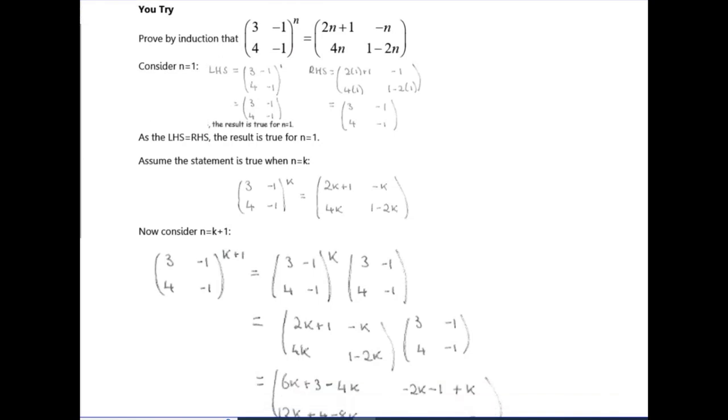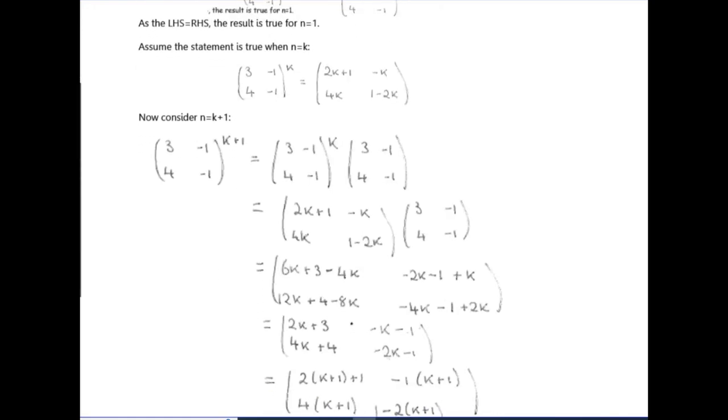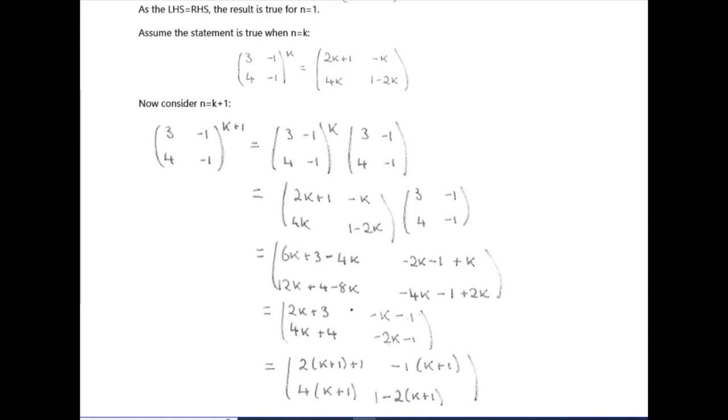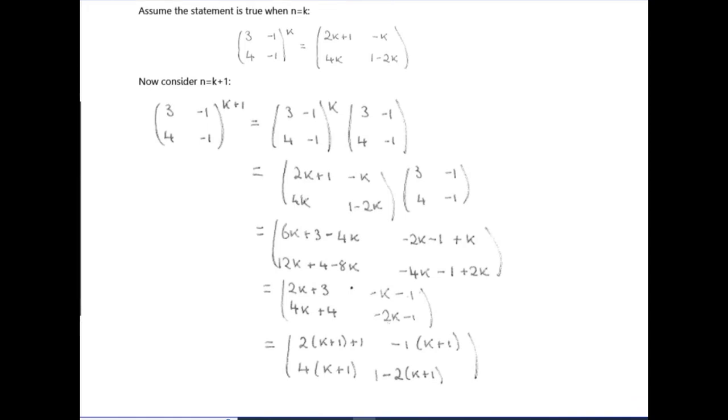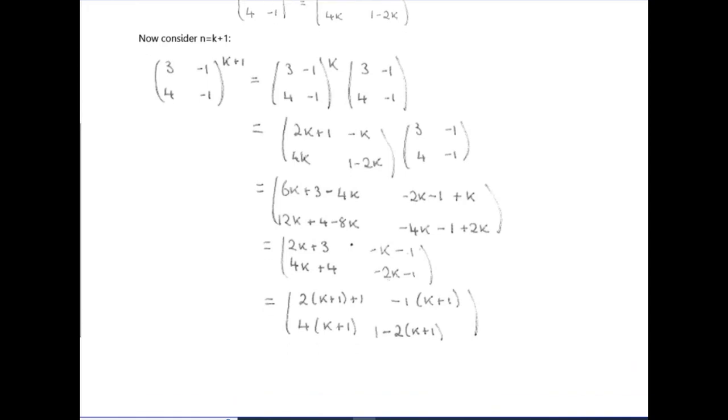I'll substitute in n equals 1 and show that both matrices are the same. The statement is true when n equals k, so replace n with k in all of your matrices. Then consider k plus 1, so you write this as matrix to the k times 1 more of the matrices. You can replace your matrix to the k with your assumed matrix, do the multiplication, tidy all of it, and you should end up with what you are aiming to get.